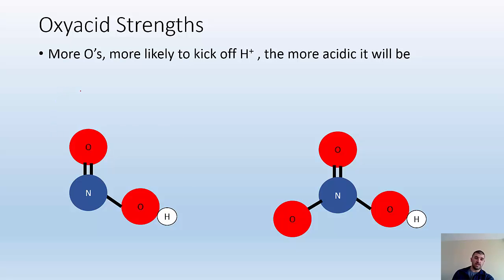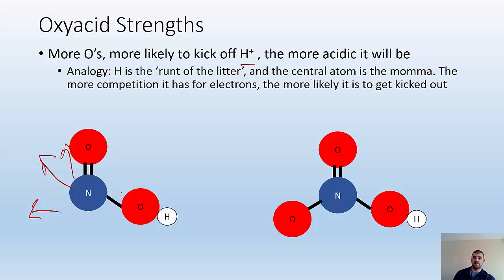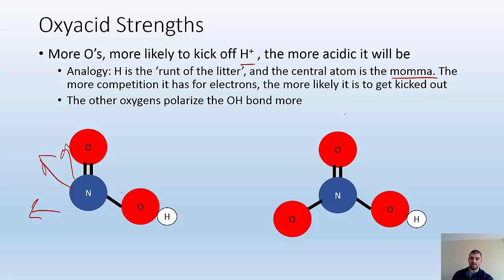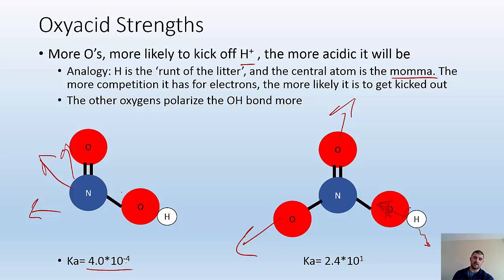Oxy acid strengths: the more oxygens you have, the more likely it is to kick off an H+, and the more acidic it will be. Hydrogen is the runt of the litter — oxygen is pulling electrons away from it. The more oxygens we have, the more they're pulling on it. The other oxygens are going to polarize this bond more. As we have more oxygens pulling electrons away from the side that hydrogen's on, it's going to polarize that bond more and it's more likely to kick off the H+. Looking at the Ka's for two molecules that differ by only one oxygen, you get a Ka of 4×10⁻⁴ versus 2.4×10¹ — over 1,000 times difference in acidity just from having an additional oxygen.